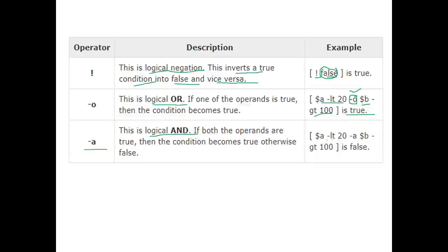For the AND operator, the condition is dollar-a is less than 20 AND dollar-b is greater than 100. If both conditions are true, it returns true; otherwise it returns false. There must be space between all variables and operators, otherwise it gives an error.